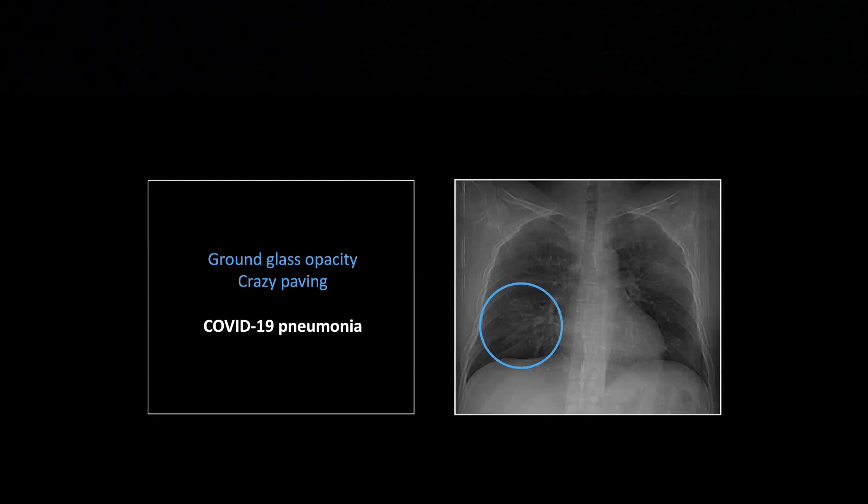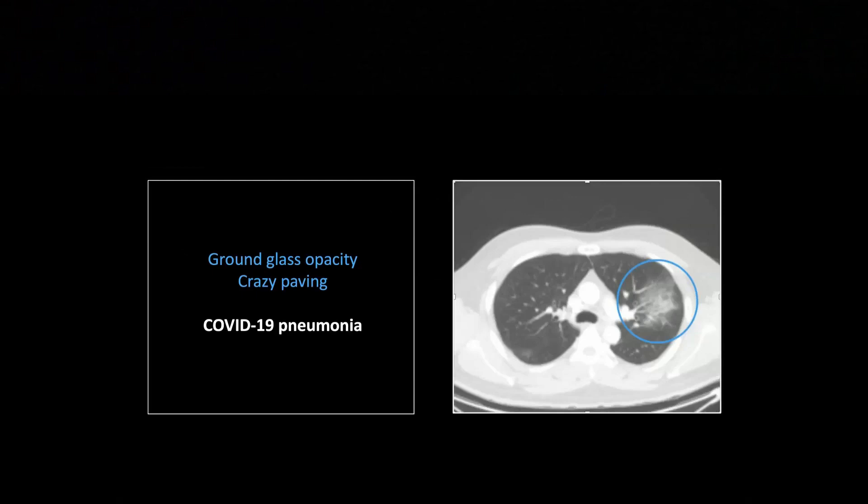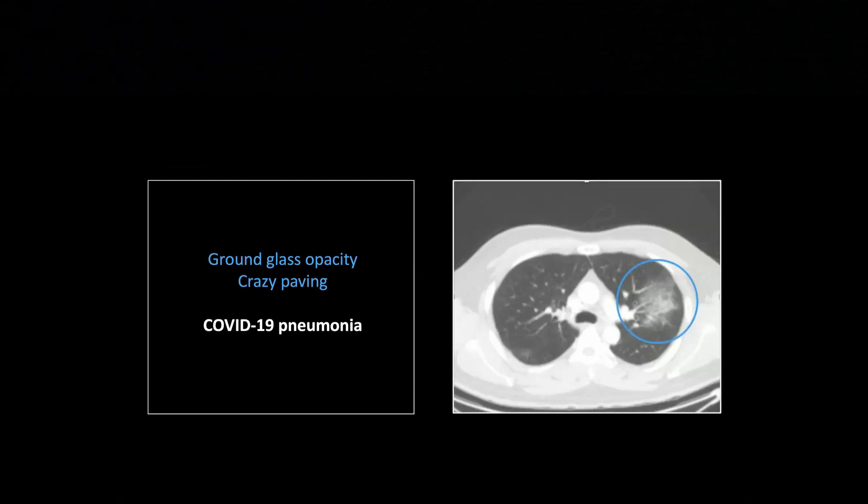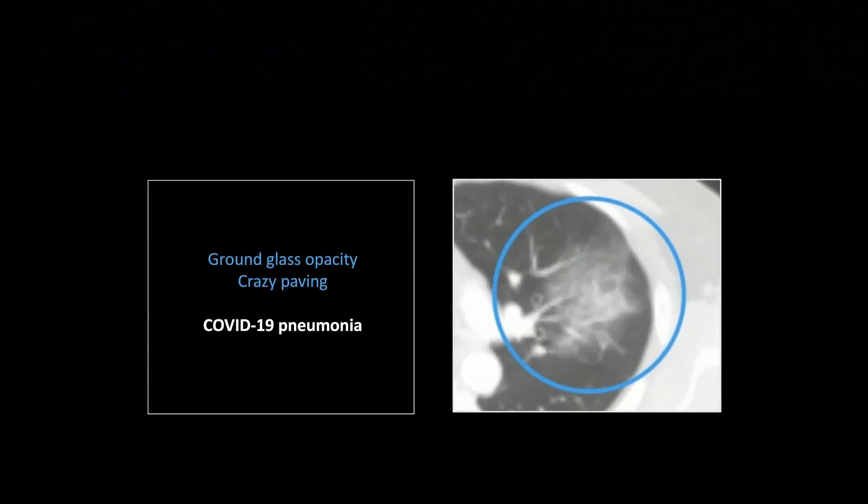There are very ill-defined foci of consolidation or density in both the left upper and right middle or lower lobes. Here is the CT. The reason we have this is to demonstrate the actual findings. This is a mixture of ground glass density and crazy paving, the two classic CT findings that were initially described with COVID.